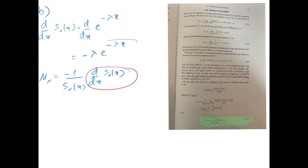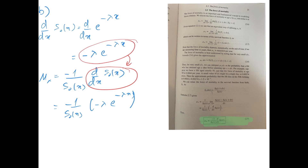The derivative is exactly this expression, so we write it as minus 1 over s0(x) times minus lambda e to the power minus lambda x. We know from the previous result that s0(x) equals e to the power minus lambda x, so we find lambda e to the power minus lambda x divided by e to the power minus lambda x, which gives lambda.